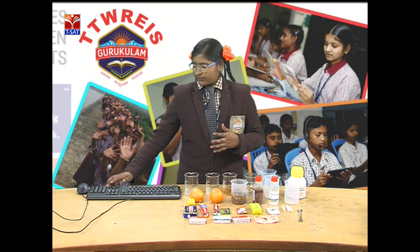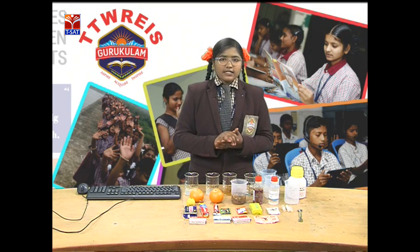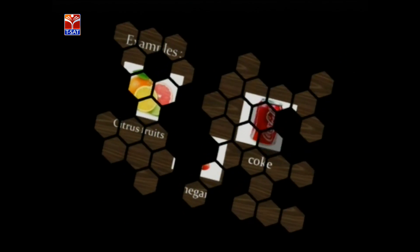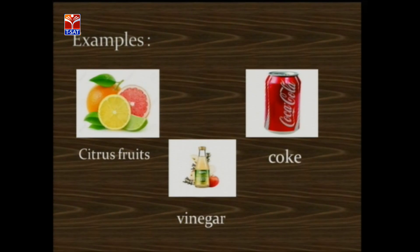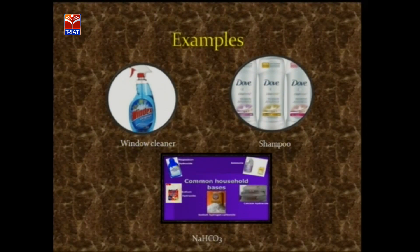Acid is nothing but a substance whose pH value is less than 7. It releases H⁺ ions and acid neutralizes the base. Some examples of acids are citrus fruits, coke, and vinegar. Base is nothing but a substance whose pH value is greater than 7. It has a bitter taste and it neutralizes the acid. Examples of bases include window cleaner, shampoo, and NaOH.